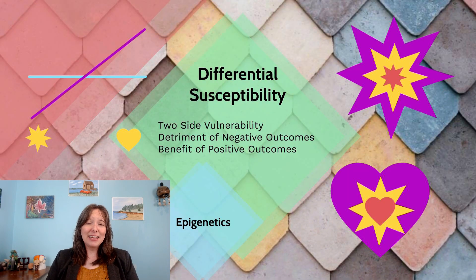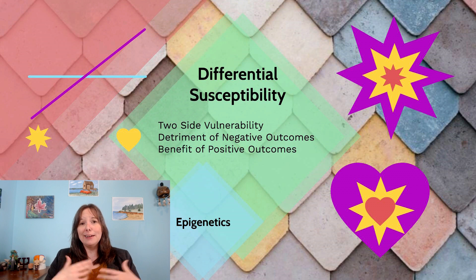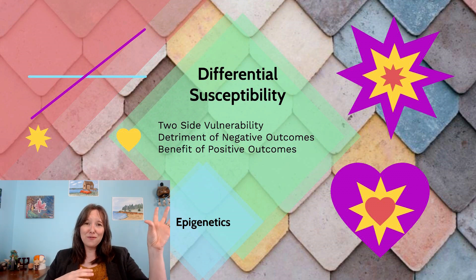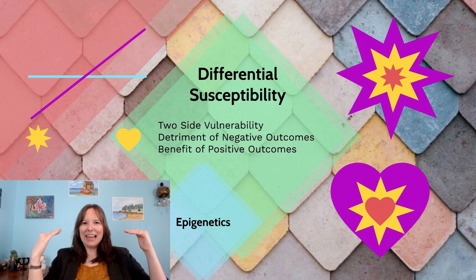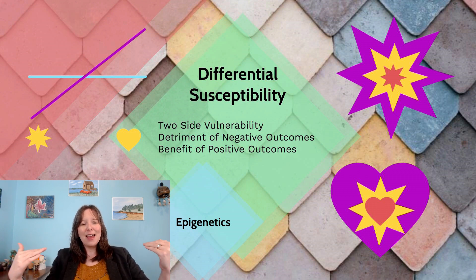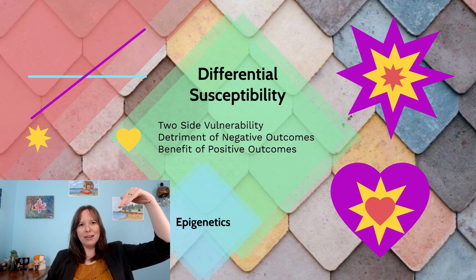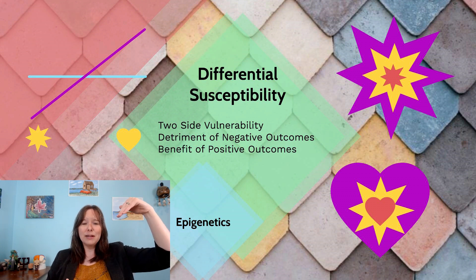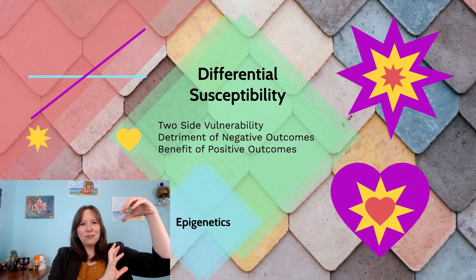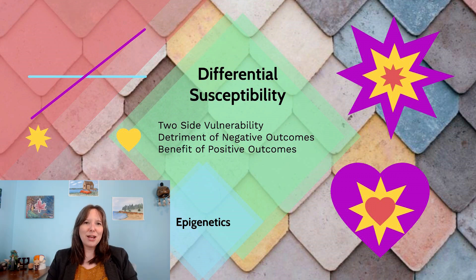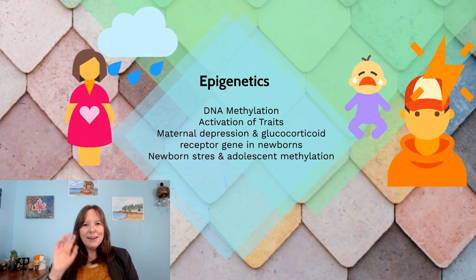One way to think about differential susceptibility is in a learning atmosphere. All kids benefit from a positive atmosphere and suffer in a negative learning environment, but some kids suffer or benefit less — they're much more stable relative to others. Some kids really benefit or fall behind drastically based on the environment. Some kids, if things are harsh or critical, really withdraw — but those same kids, if things are really comforting, really come out of their shell and benefit greatly.